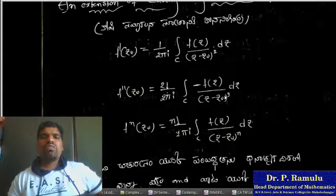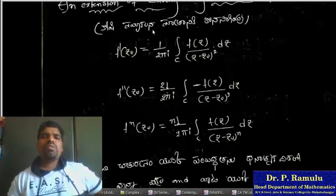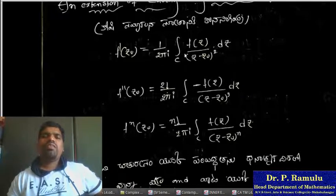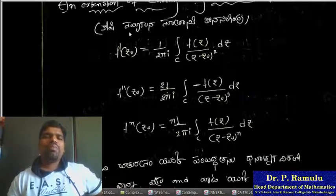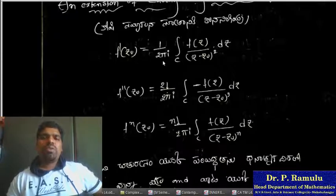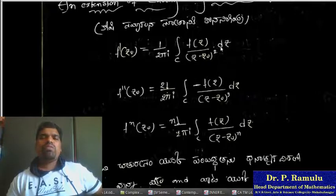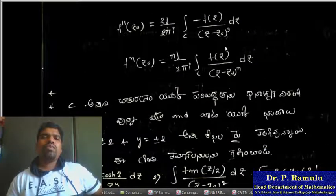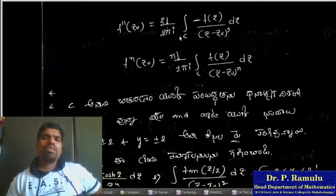Cauchy's Integral Formula: F(z₀) = 1/(2πi) × integration over C of F(z)/(z − z₀) dz. F'(z₀) = 1/(2πi) × integration over C of F(z)/(z − z₀)² dz. F''(z₀) = 2/(2πi) × integration over C of F(z)/(z − z₀)³ dz.